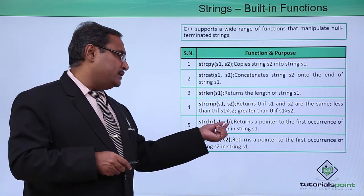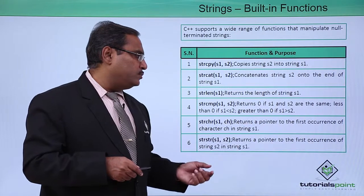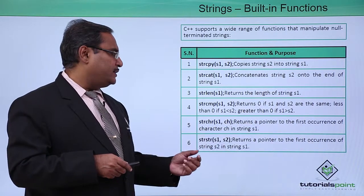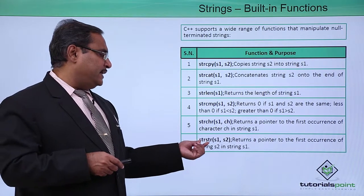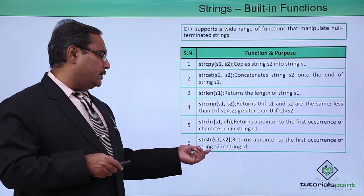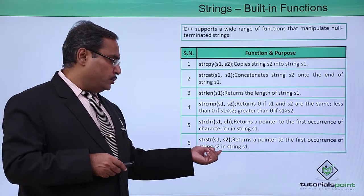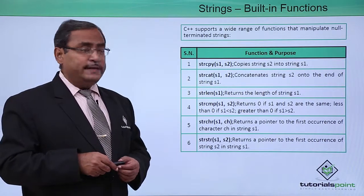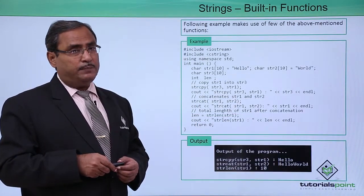strchr s1 ch returns a pointer to the first occurrence of the character ch in the given string s1. strstr s1 s2 returns a pointer to the first occurrence of the substring s2 in the main string s1. These are the different list of functions and their respective purposes.